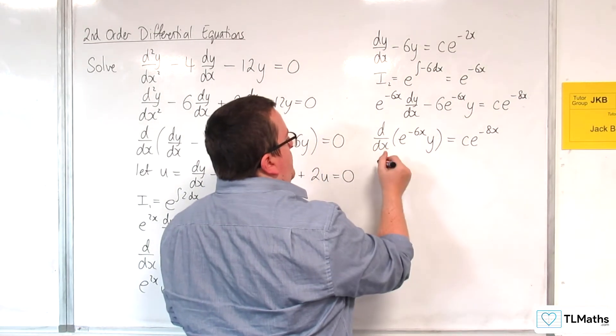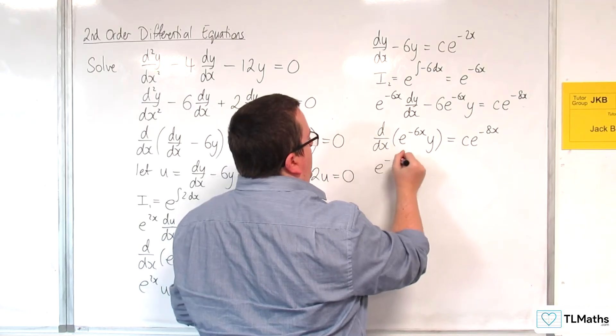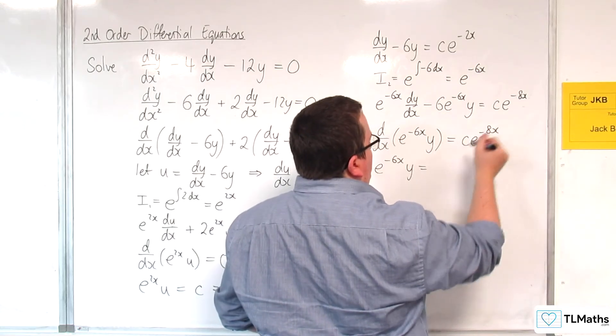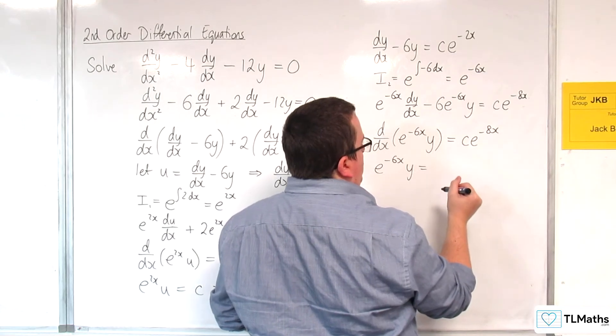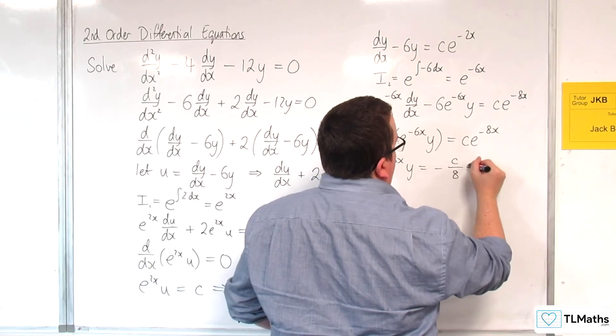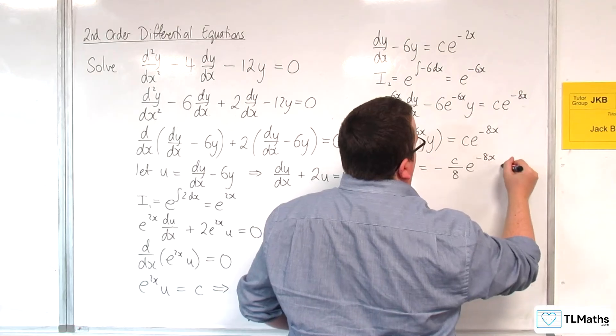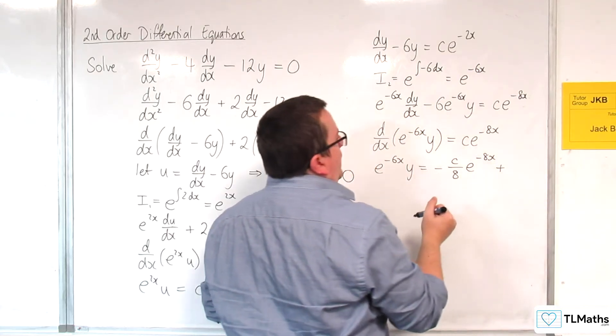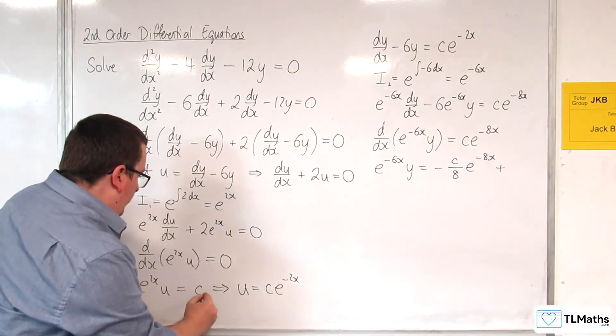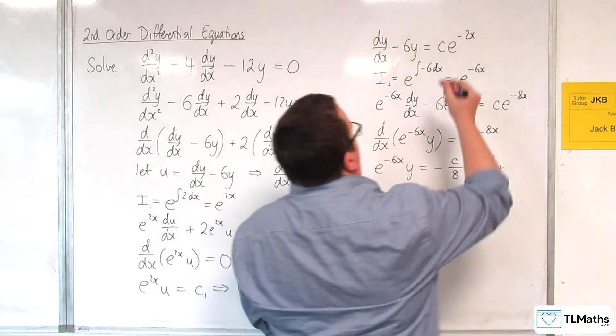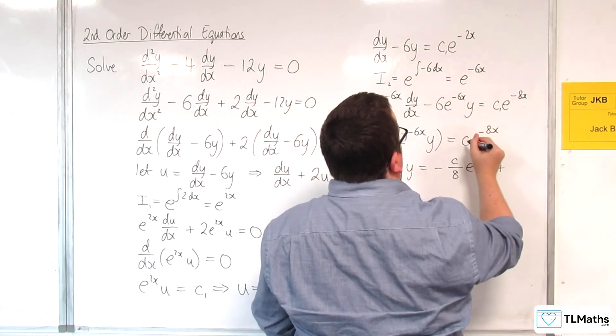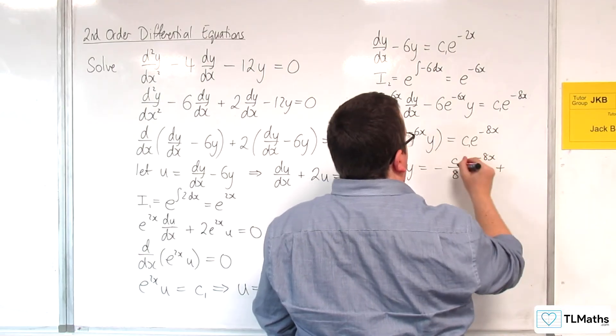Right, then I am going to integrate both sides. So e^(-6x)y is equal to ce^(-8x) will integrate to -c/8·e^(-8x). And I'll have another constant. So what I'll probably want to do is go back and call this c₁.